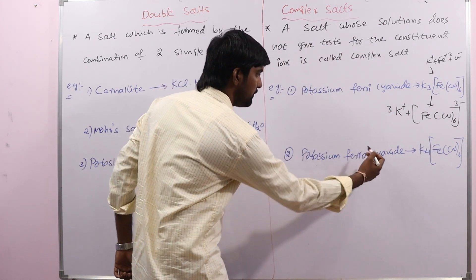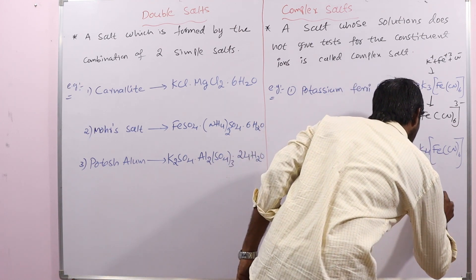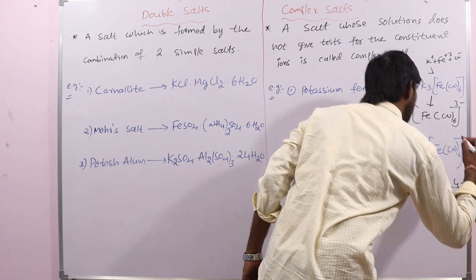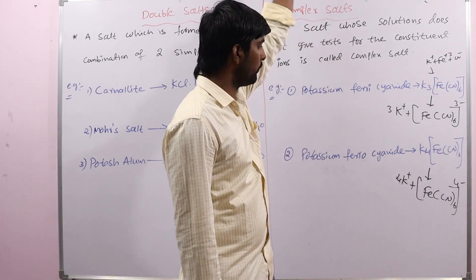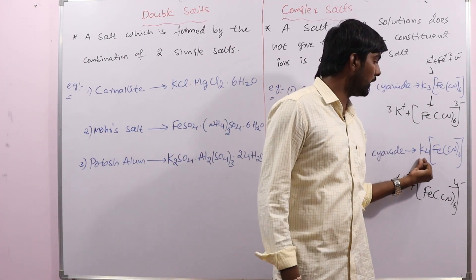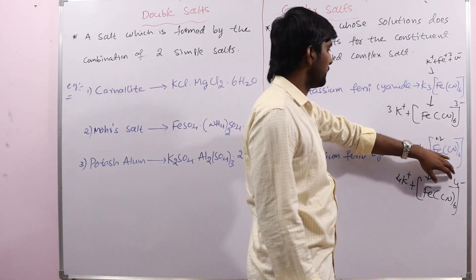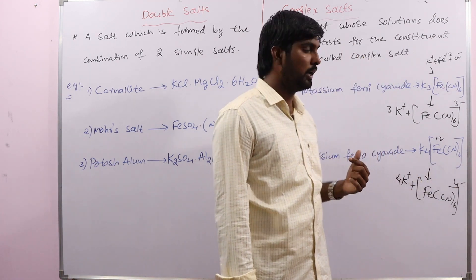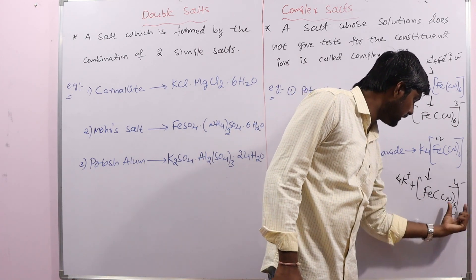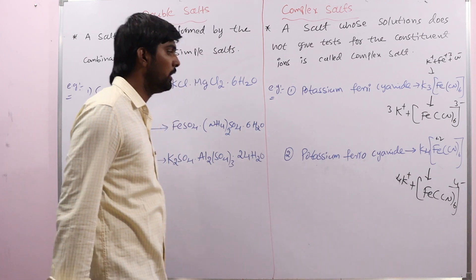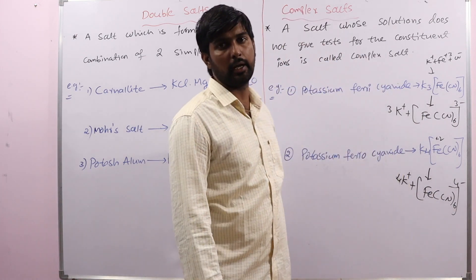Another example is potassium ferrocyanide. When dissolved in water, it gives 4K⁺ ions plus the complex ion [Fe(CN)₆]⁴⁻. Here also it gives potassium ions and a complex ion. It is formed by the combination of K⁺, Fe²⁺, and CN⁻ ions. If you want to test the presence of iron and cyanide, we cannot get the test for these two ions — only the test for potassium ions — because this is a stable complex ion that does not dissociate into its constituent ions under normal conditions. So we cannot get the test for Fe²⁺ or the cyanide ion.